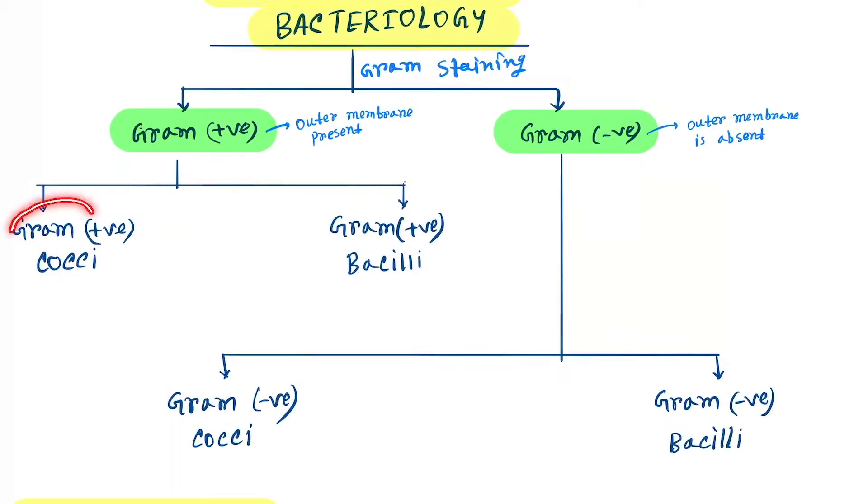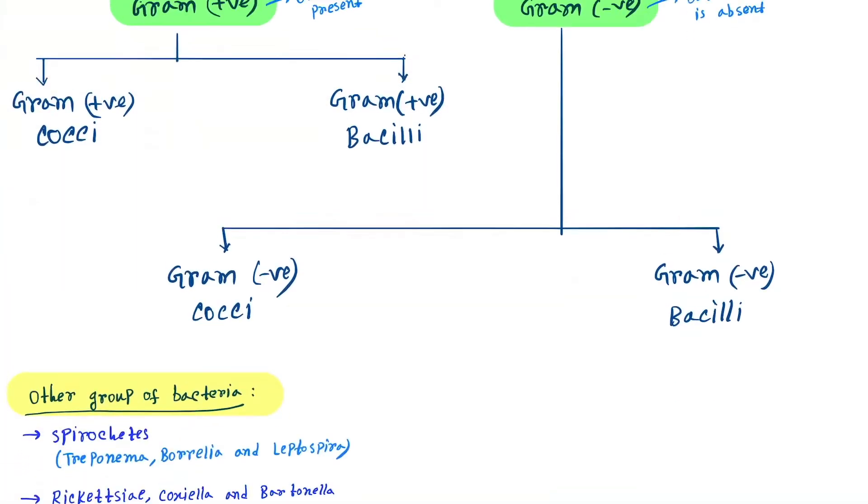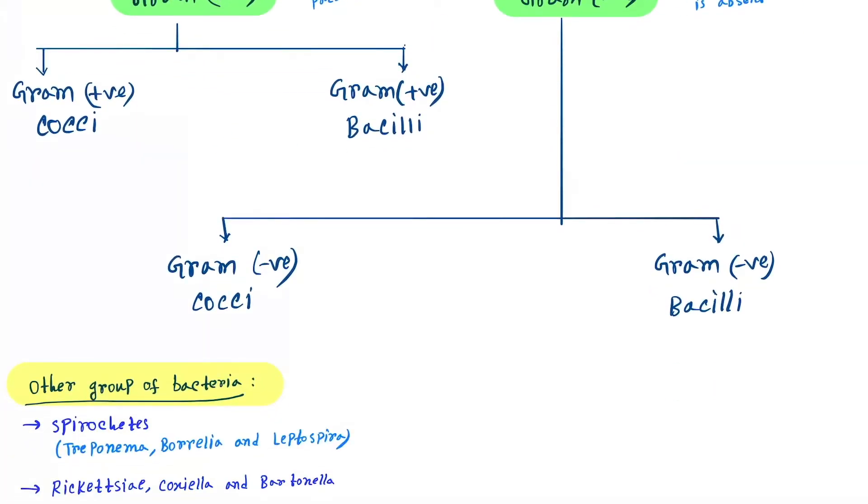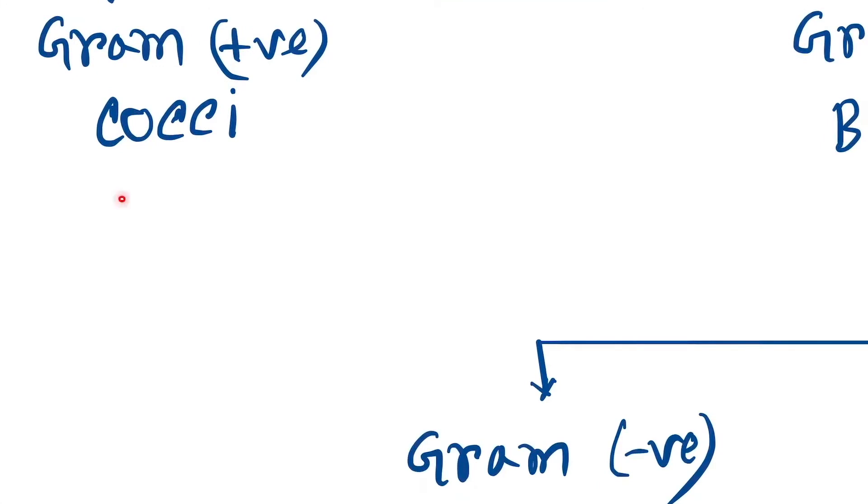And the gram negative bacteria are divided into gram negative cocci and gram negative bacilli. Cocci means they are round shaped, and bacilli means they are rod shaped.